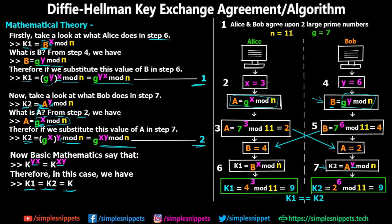This is how the Diffie-Hellman algorithm works when sharing a symmetric key between two parties. In the next video we will see a drawback of this algorithm — a man-in-the-middle attack — where a hacker uses mathematical calculations to obtain the actual key, showing that Diffie-Hellman is not a fully foolproof method.